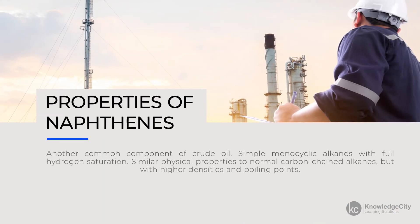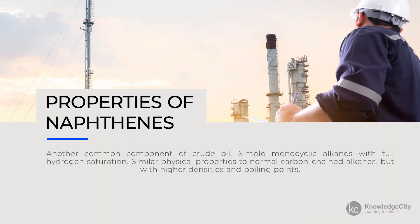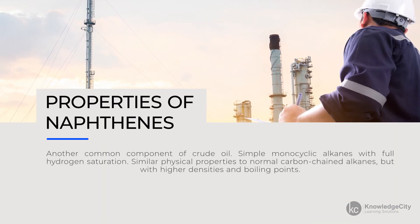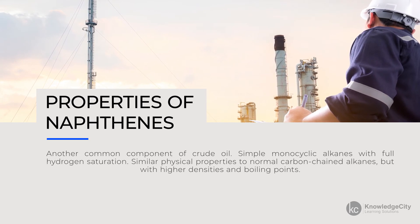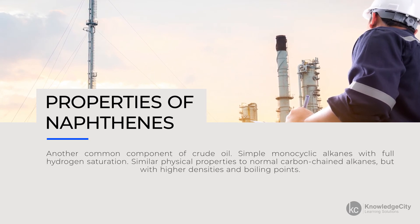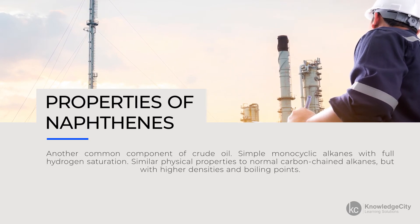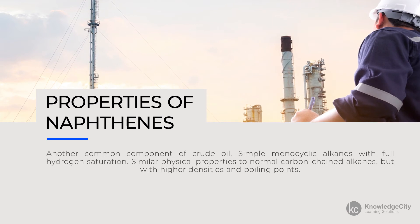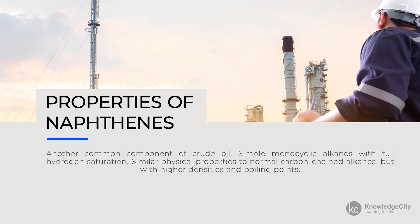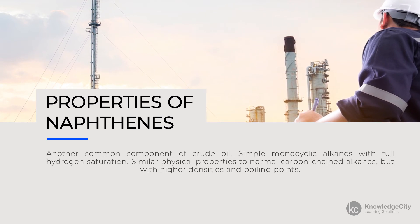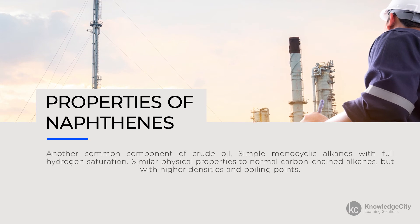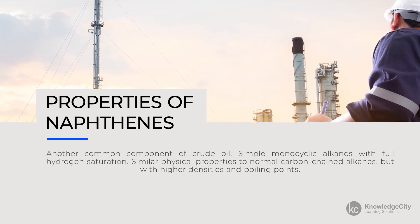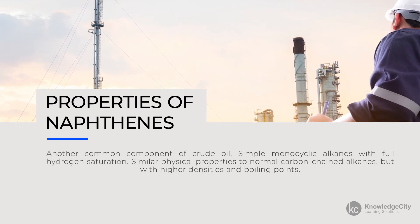Naphthenes are another common component of crude oil at 30 to 60 percent composition. They are simple monocyclic alkanes with full hydrogen saturation, so there are no multiple rings or multiple bonds across the carbons. They have similar physical properties to normal carbon chain alkanes, but have higher densities and boiling points.